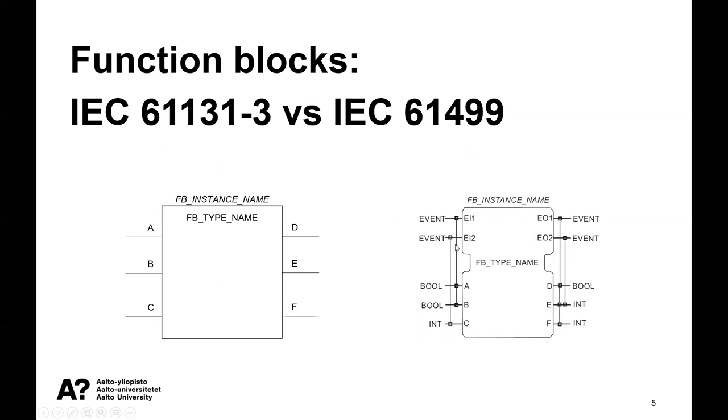To these event variables, we have connected input variables and connected output variables. How does it work? When the event is triggered, the values of the corresponding variables that are connected to this event are updated.